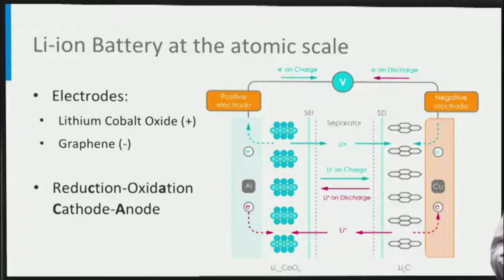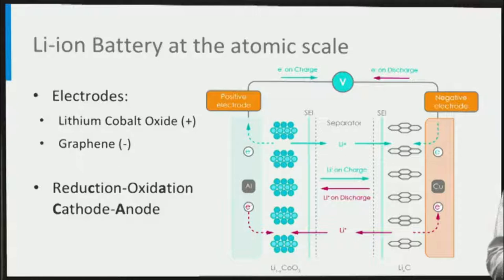Only when the external circuit is closed via an application will an electrical current run, driven by the lithium ions that migrate from the negative to the positive electrode. Under these conditions the battery is discharging.